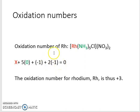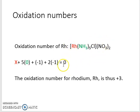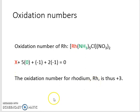This whole complex has a charge of zero — it's neutral — so therefore it is equal to zero. Now we can solve for x, and the oxidation number for rhodium is thus plus three.